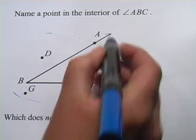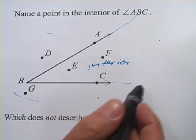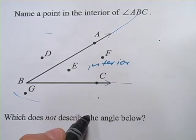But remember, this stretches on, so if you saw a point right here, even though they hadn't drawn the lines, that would still be on the interior of that angle.